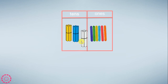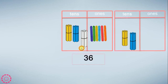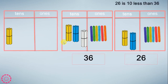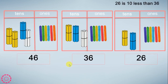This is the tens. We have 36: 10, 20, 30, and 1, 2, 3, 4, 5, 6 — 36. We have 26 and 46. 26 is 10 less than 36. And 46 is 10 more than 36.